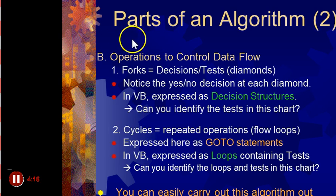Operations to control the flow of data, those are forks, equal decisions or tests. So that's these diamonds here, because you go this way or this way. So that's called controlling the flow of the data. Notice the yes, no decision at each diamond.